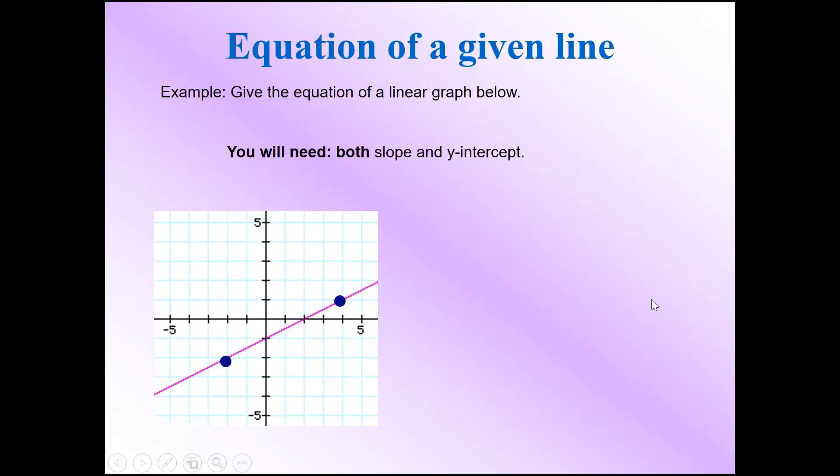In this example we are given a graph of a straight line. The question says give the equation of the linear graph below. We still need two pieces of information: the slope and the y-intercept.